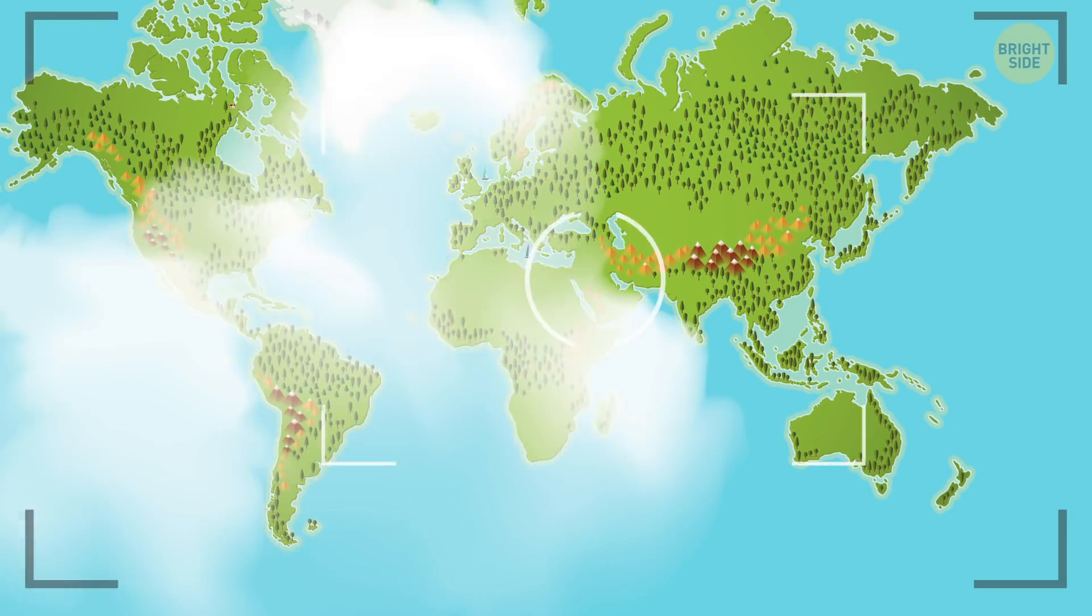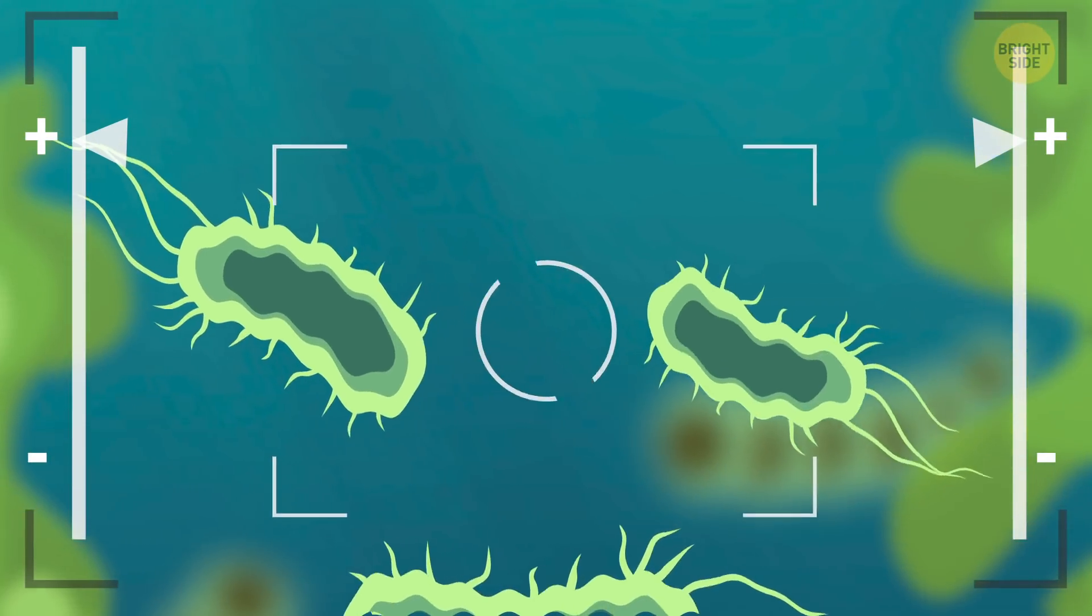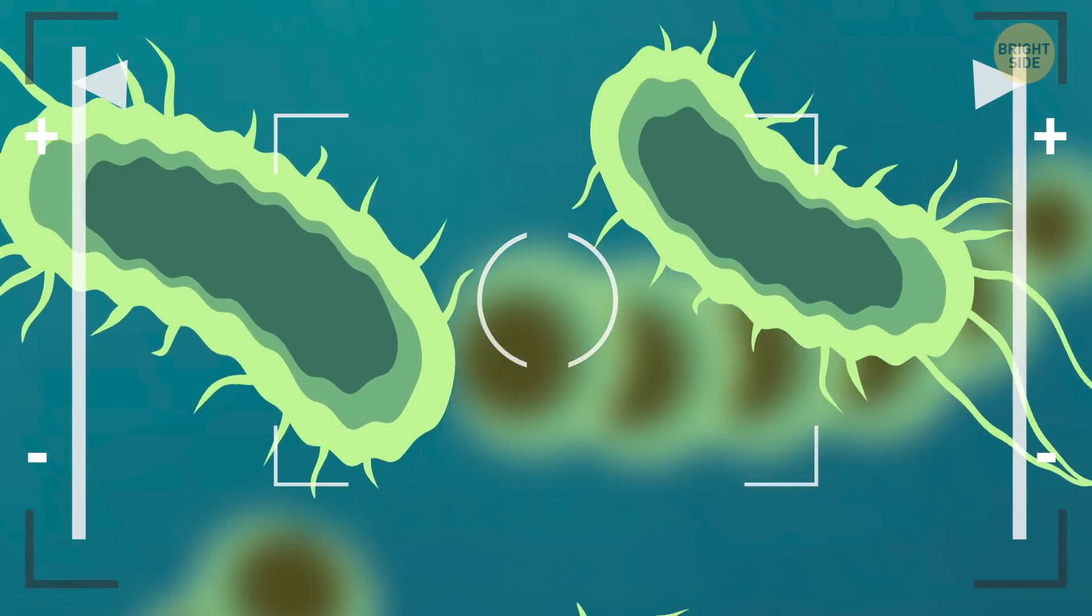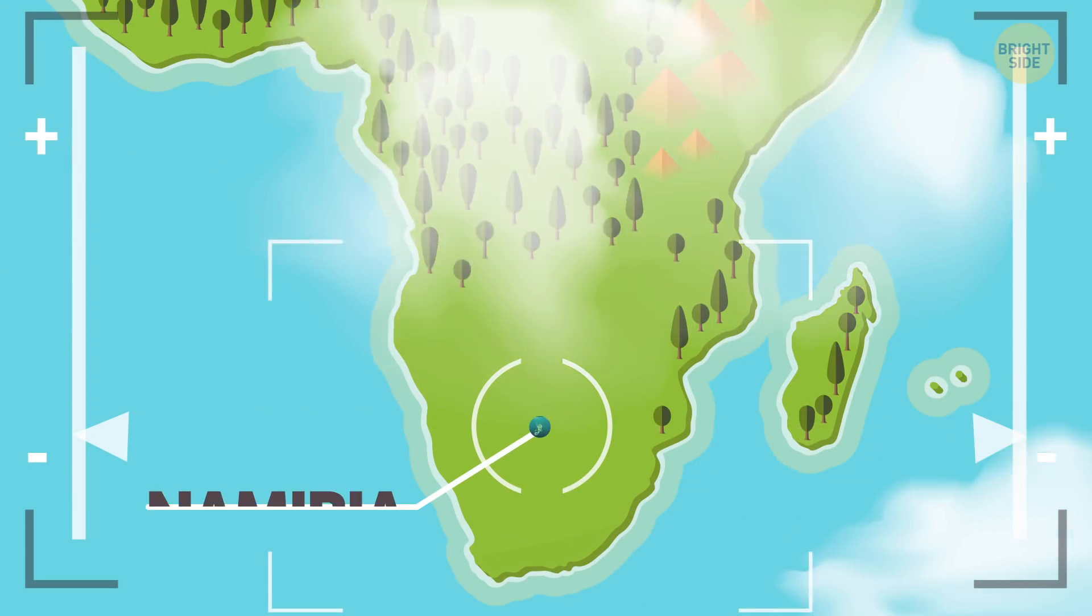We'll start with things you can see with your own eyes, though. And the first one is a bacterium! I know, I was surprised too! It's obviously the largest bacterium in the world, and it lives in the coastal waters of Namibia.